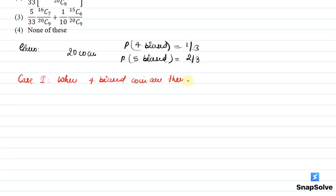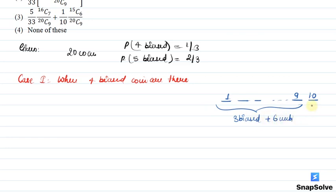जब 4 biased coins होंगे, तो हम यह बोल सकते हैं कि first जो 9 draws होंगे, 1 से लेकर 9 तक, इसके बीच में 3 biased coins और बाकी के 6 unbiased coins बाहर आ जाएं। और जो 10th होगा, उसके अंदर जो 4th biased coin है, वो भी बाहर आ जाए। तो सबसे पहले, यह probability कि 9 picks में हमारे पास 3 biased coins आ जाएं और 6 unbiased coins आ जाएं, वो क्या होगी?